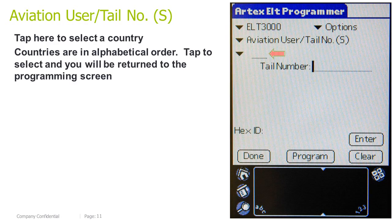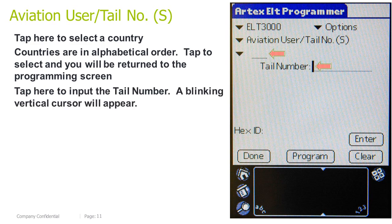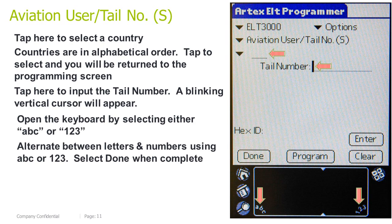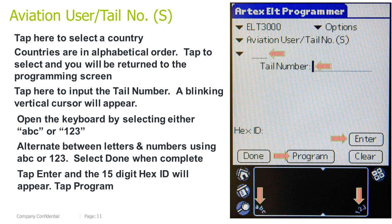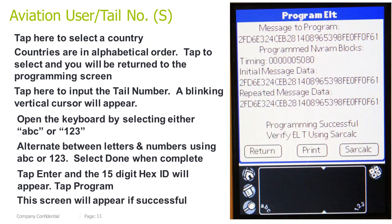Tap here to select a country. Countries are in alphabetical order; tap to select and you will be returned to the programming screen. Tap here to input the tail number — a blinking vertical cursor will appear. Open the keyboard by selecting either ABC or 123. Alternate between letters and numbers using ABC or 123. Select Done when complete. Tap Enter and the 15-digit HEX ID will appear. Tap Program. This screen will appear if successful.